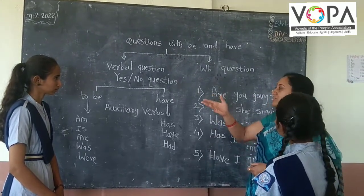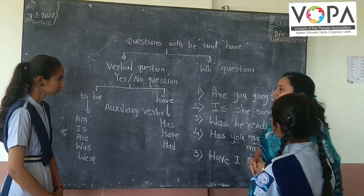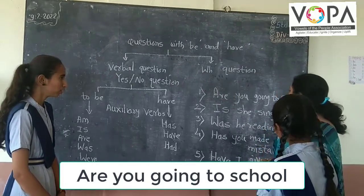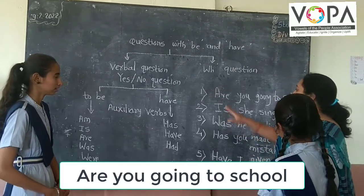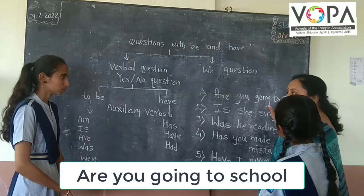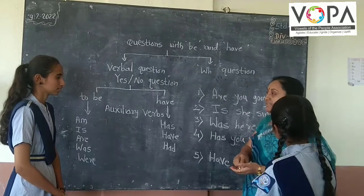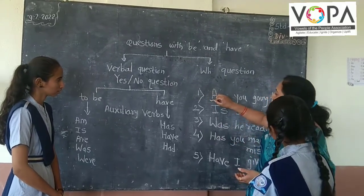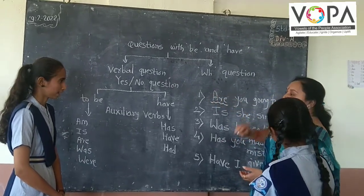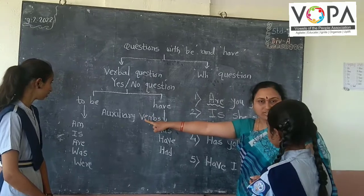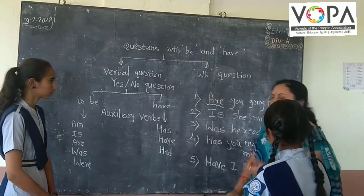So first question — please Sonali, read it. 'Are you going to school?' This question starts with 'Are,' and 'Are' is an auxiliary verb.